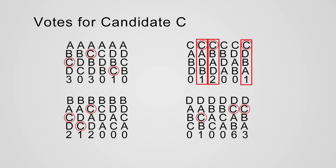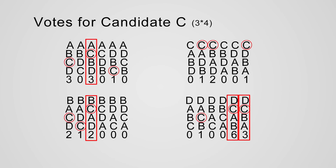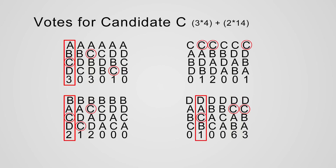Candidate C got four first place votes, each worth three points — twelve points. Second place votes for candidate C: nine here, three here, and two there, giving fourteen second place votes, each worth two points — twenty-eight points. So many people liked candidate C second best. The number of third place votes for candidate C: one, three, and two, giving six third place votes worth one point each. So twelve plus twenty-eight is forty, plus six is forty-six points for candidate C.